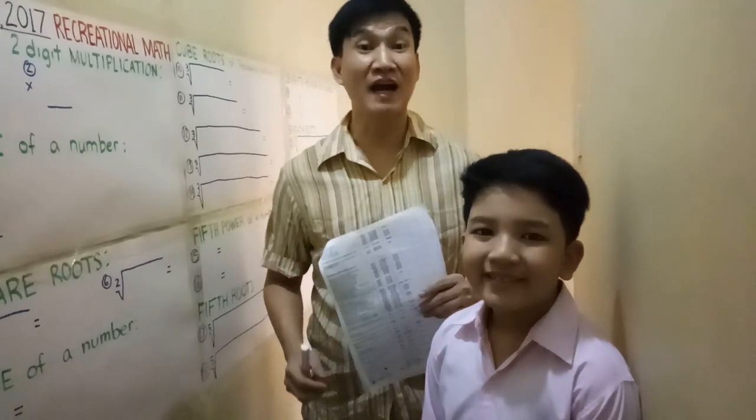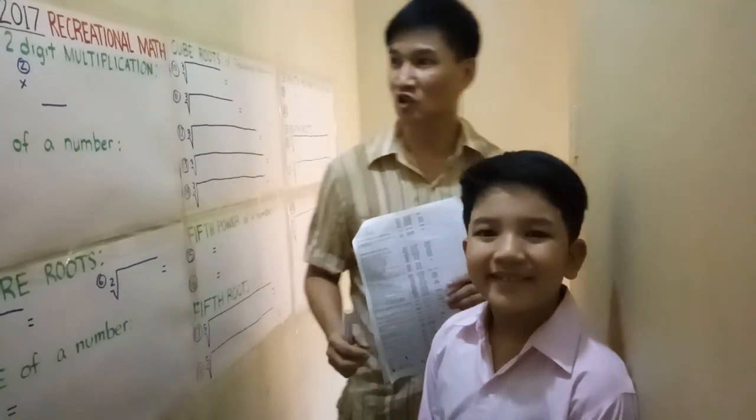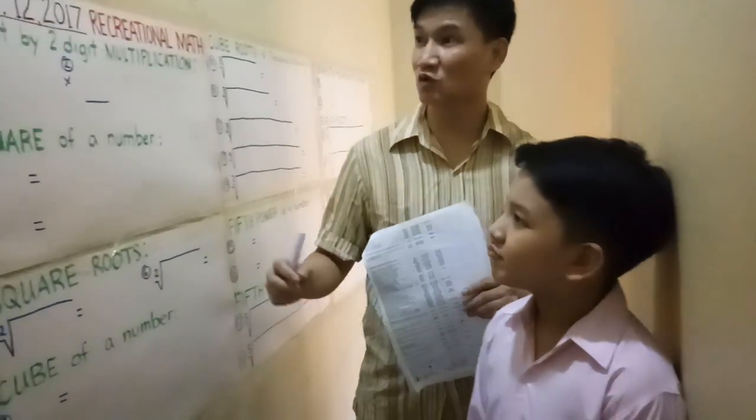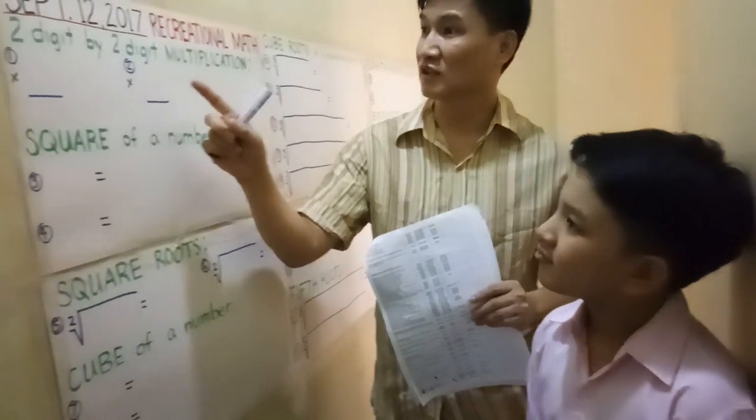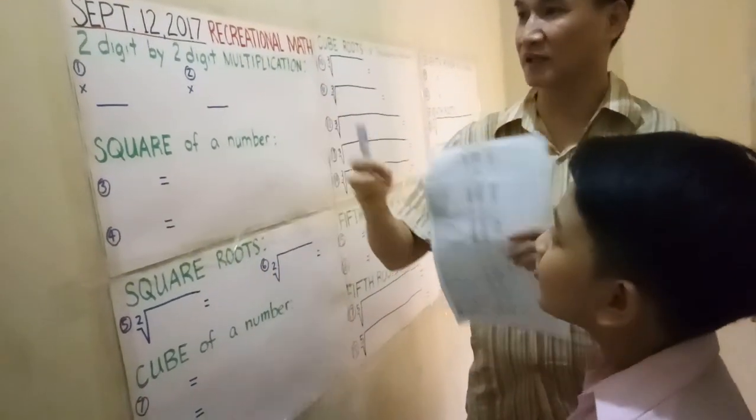Hello! Recreational math, or fun math. Joshua, let's do this. 2 by 2 — 2-digit by 2-digit multiplication.